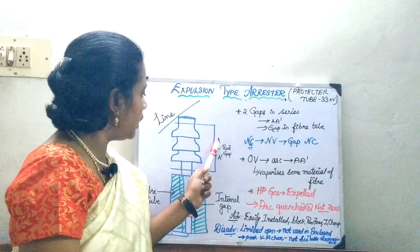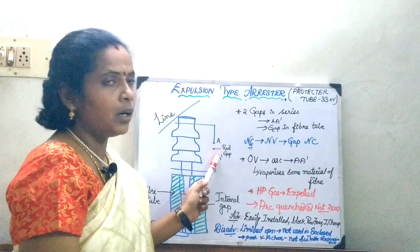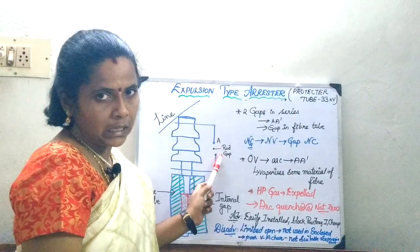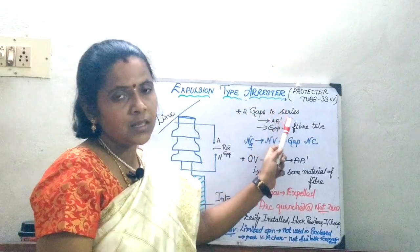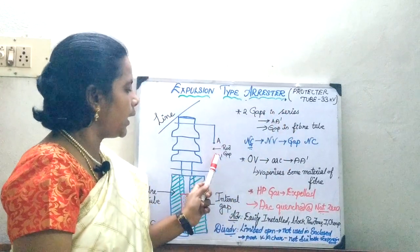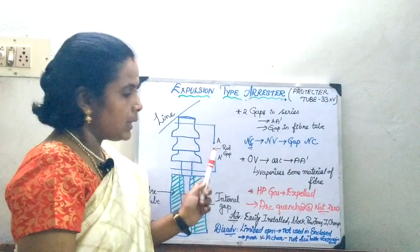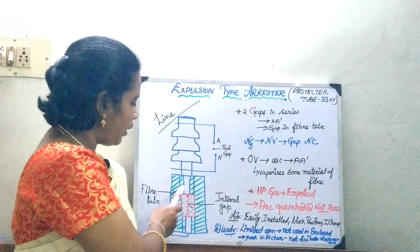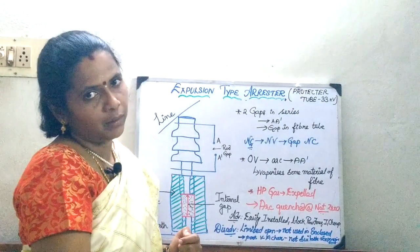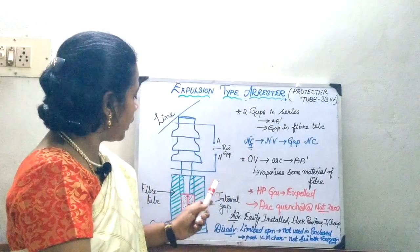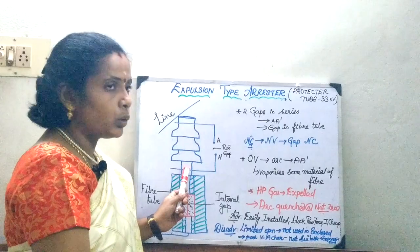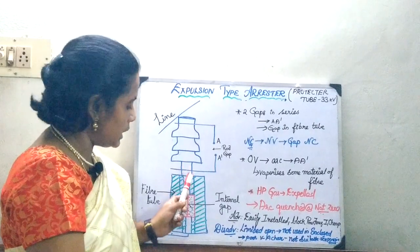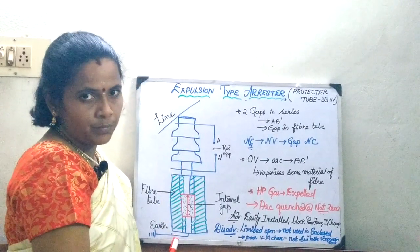In the earlier thing, you had only one spark gap in series. Now, you are going to have two gaps in series - one is going to be provided between this path A, A dash in your rod gap. The second path is going to be provided inside the fiber material. So the one end of the fiber is going to be connected to the rod, which is going to be in series, the other end is going to be earthed.